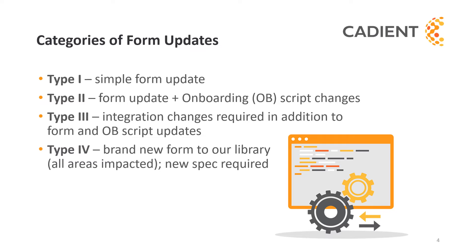There are several categories of form updates. We refer to simple form updates as Type 1 forms. A Type 2 is a form update plus onboarding script changes. Type 3 forms require integration changes in addition to form and onboarding script updates. And a Type 4 form is a brand new form to our library, meaning that all the above areas are impacted and a new spec is required.